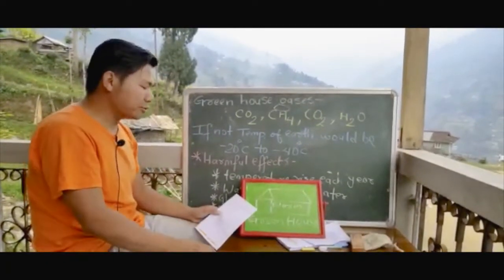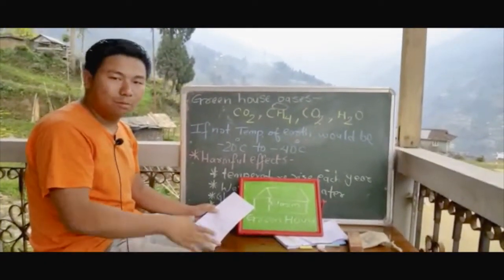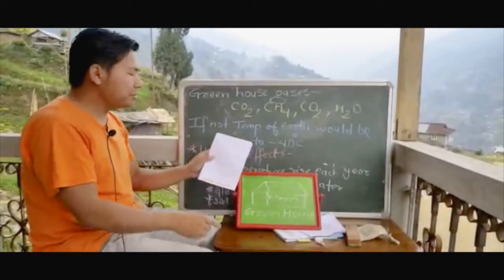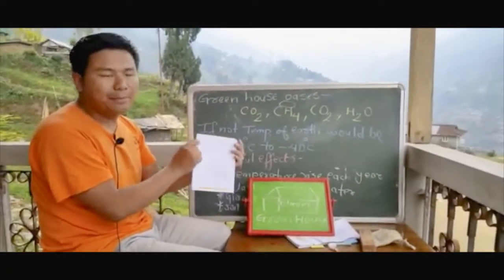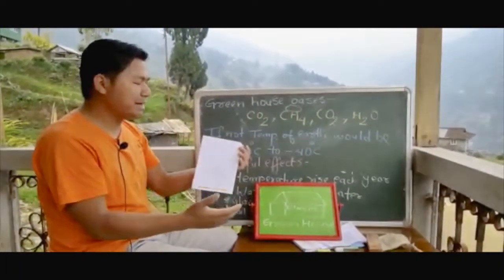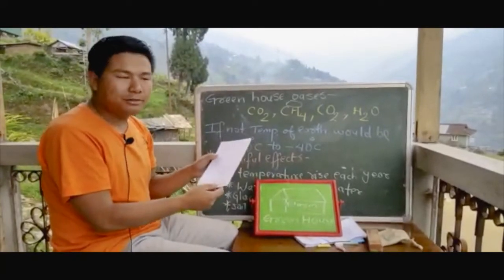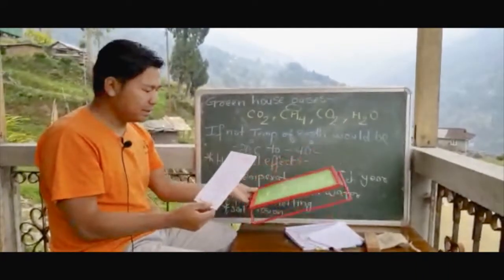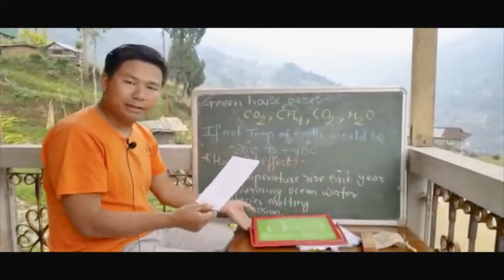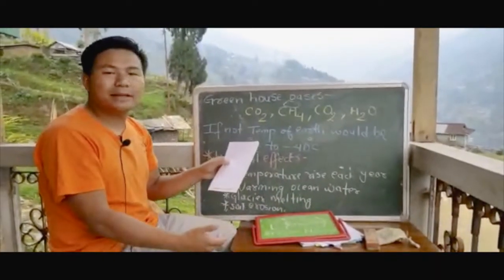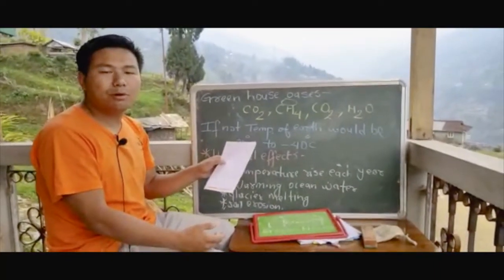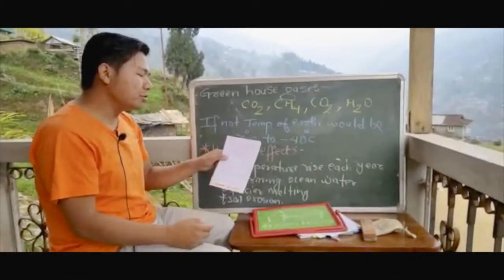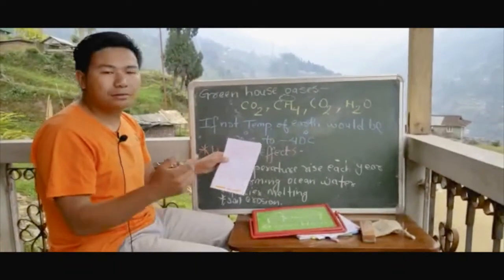How can we control global warming? Number one is afforestation — we should plant more trees and plants. We also need to reduce the use of products that generate greenhouse gases.